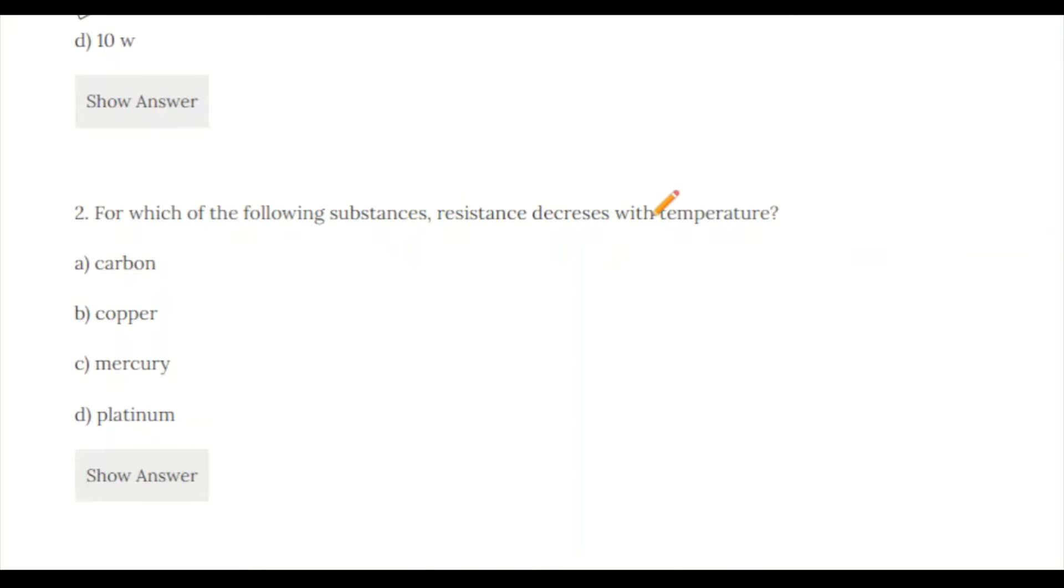Question 2: Whose resistance decreases with temperature? a) carbon, b) mercury, c) copper, d) platinum. Options B, C, and D are metals, so their resistance increases with temperature. Carbon is a semiconductor, so its resistance decreases with temperature. Option A is the correct answer.